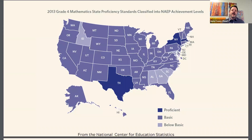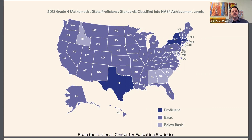Fourth grade math declined in every state, with reading scores declining in 30 states. The states with the steepest math declines included Delaware, Virginia, and DC, followed by New Mexico, New York, and Maryland, which each lost 10 points on average.